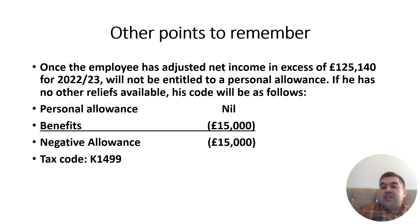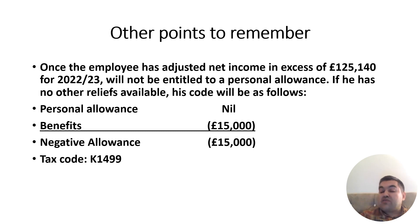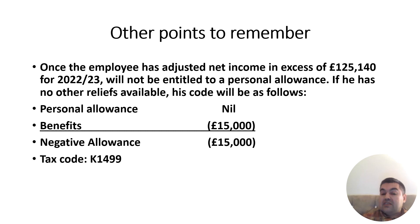Where an employee has adjusted net income in excess of £125,140, they will not be entitled to any personal allowance. If they also have benefits, they will have a negative allowance. For example, with benefits of £15,000: take £15,000, remove the last zero to give 1,500, subtract one to give 1,499, and HMRC places K at the front — giving tax code K1499.